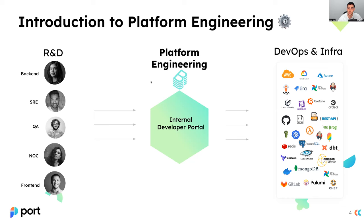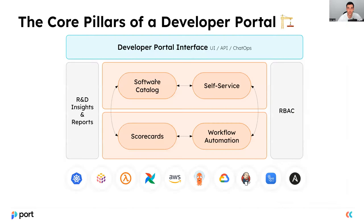Now we're going to talk about how to build your internal developer portal using a data model. Let's go over the core pillars of a developer portal. First, we have the software catalog — the visibility layer that gives us insight, that one pane of glass into everything happening in our organization: the services, the deployments, the CICD jobs, the resources from our cloud provider, and how they all connect to one another. This is that one tab developers need in their browser to answer every question, such as who is the current on-call, what is the documentation or readme for a given service.